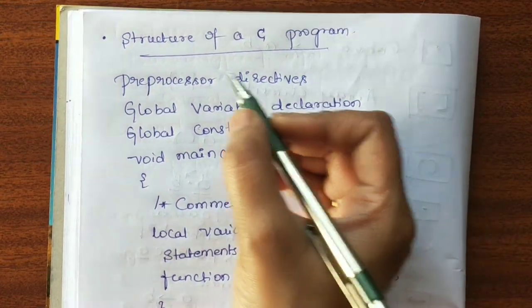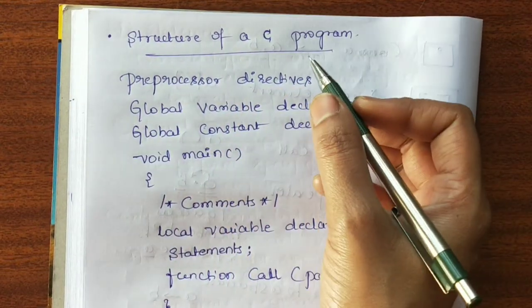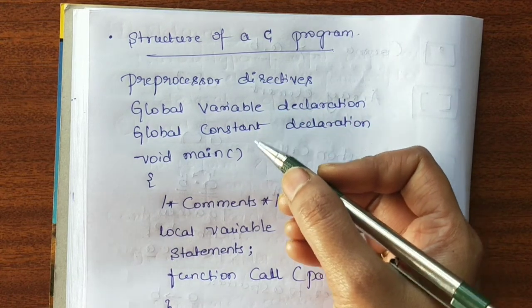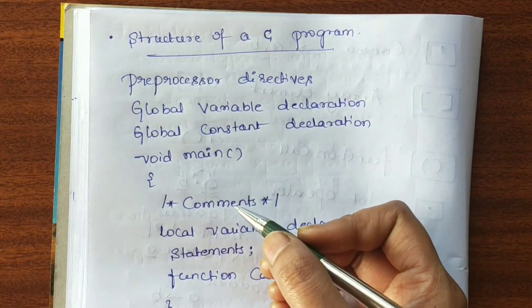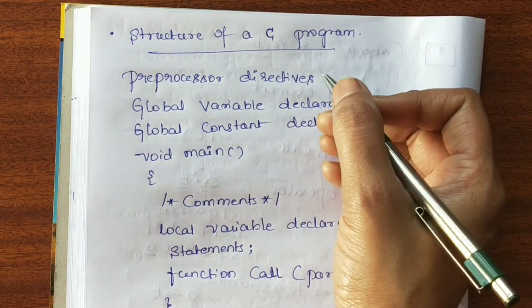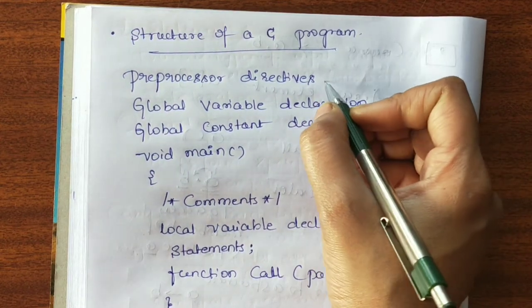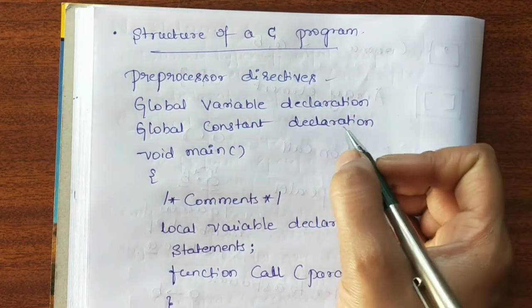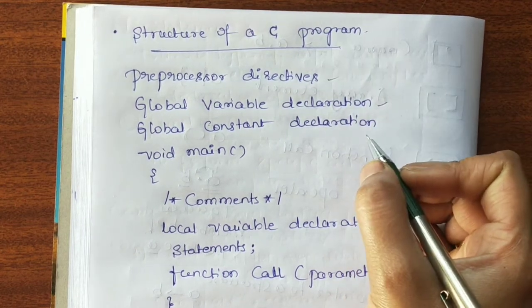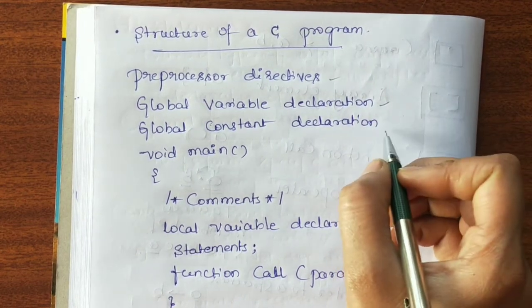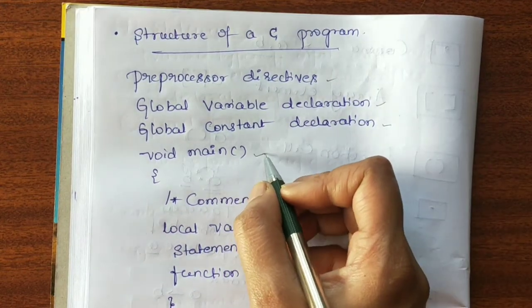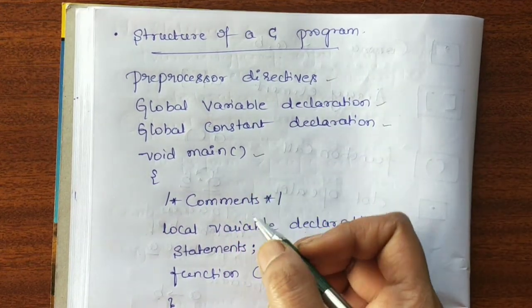Today I am going to discuss regarding the structure of the C program. Let us see what are the different components which are present in the structure of a C program. The very first component is preprocessor directive. Next one is global variable declaration. Next we do global constant declaration. Then void main, or simply main.